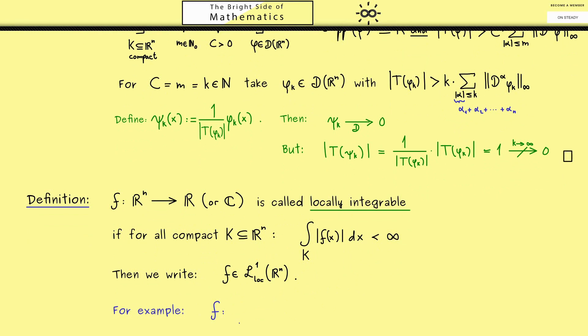Please note, of course, all integrable functions are also locally integrable. We just have more functions here. For example, if you consider the function f which sends R to R and x to x squared, then this function is not integrable because the integral over the whole domain R would be infinity. However, it is locally integrable because it is a continuous function, and when we integrate over a bounded set here, we don't have any problem. We get out a finite integral.